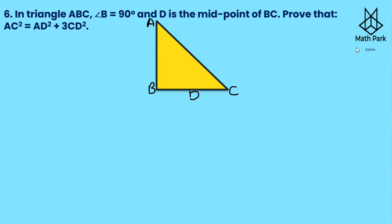Let us start with question number 6. In triangle ABC, angle B is 90 degrees. D is the midpoint of BC. Prove that AC² is equal to AD² plus 3CD². So let us join AD. We have to prove AC² is equal to AD² plus 3CD².